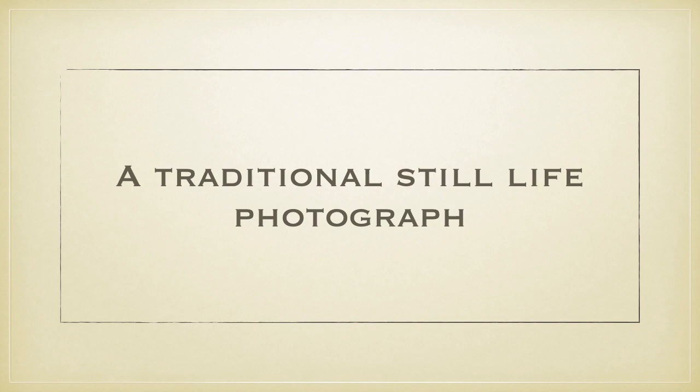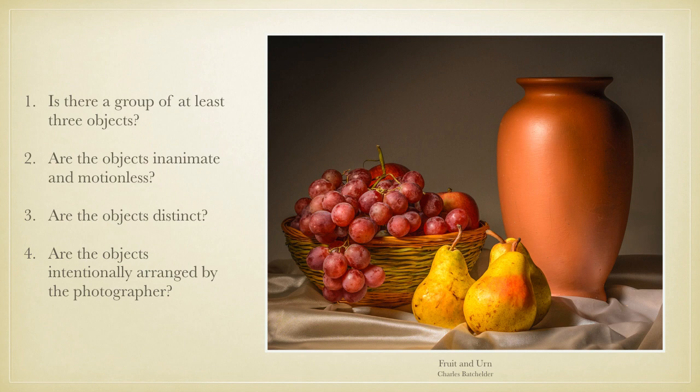Now let's consider a photograph that I do consider to be a traditional still life and ask our questions. Is there a group of at least three objects? Are the objects inanimate and motionless? Are the objects distinct? Are the objects intentionally arranged by the photographer? In this instance, all the questions can be answered affirmatively. Therefore the photograph qualifies as a traditional still life.